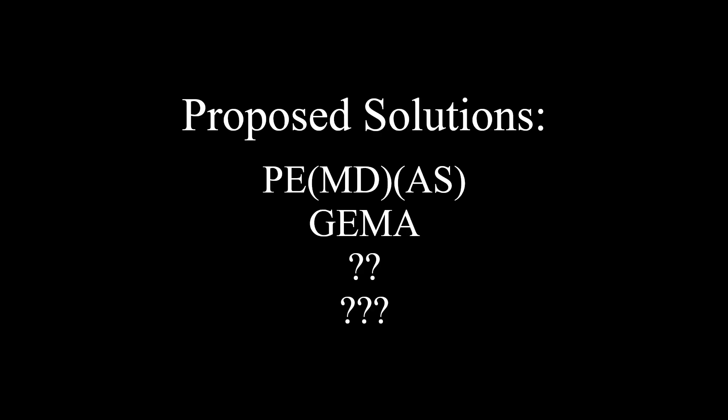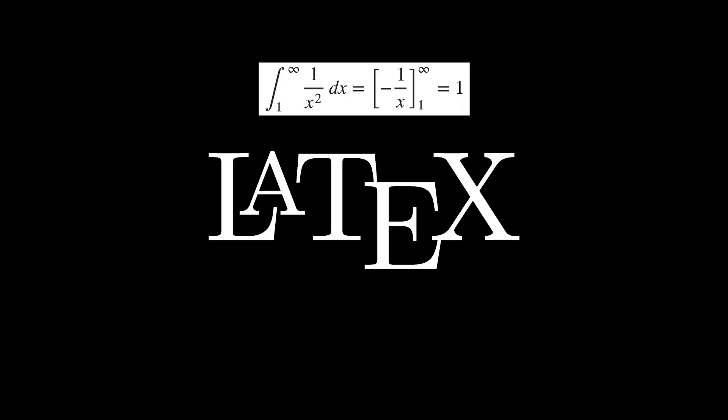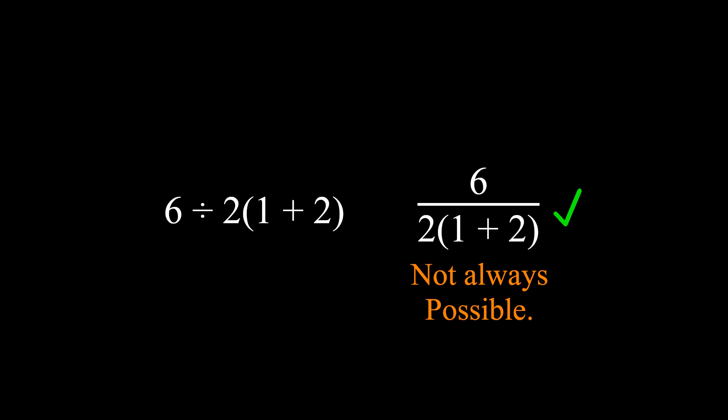One of the most common proposals is that people should just write clearly, damn it. Get rid of the obelus and write division as fractions, and if ambiguity could arise, just write brackets to clarify. Firstly, telling people to please behave nicely is the most non-solution solution in existence, and has never worked. Secondly, as much as I agree with this point, until the day every writing application has LaTeX support, we will often be confined to a single line of text, and we need to deal with that.